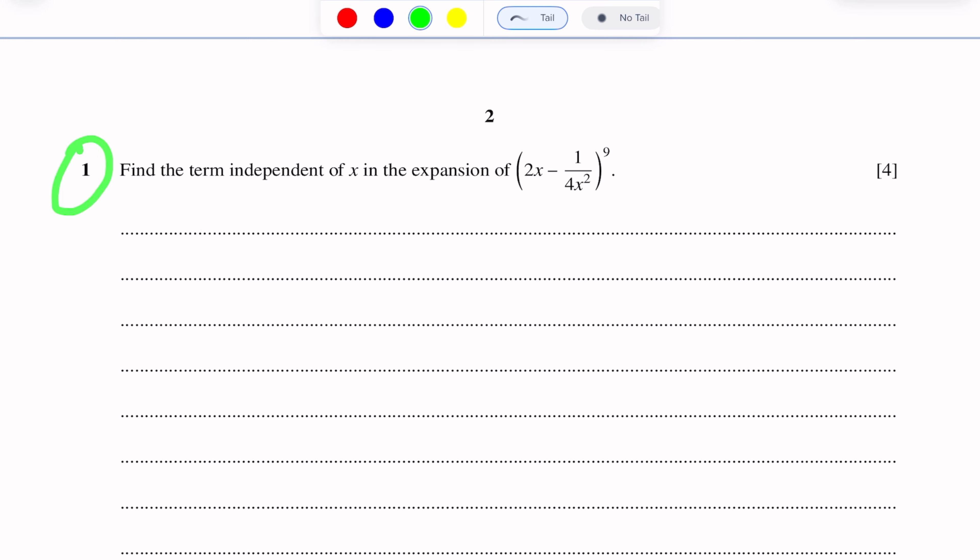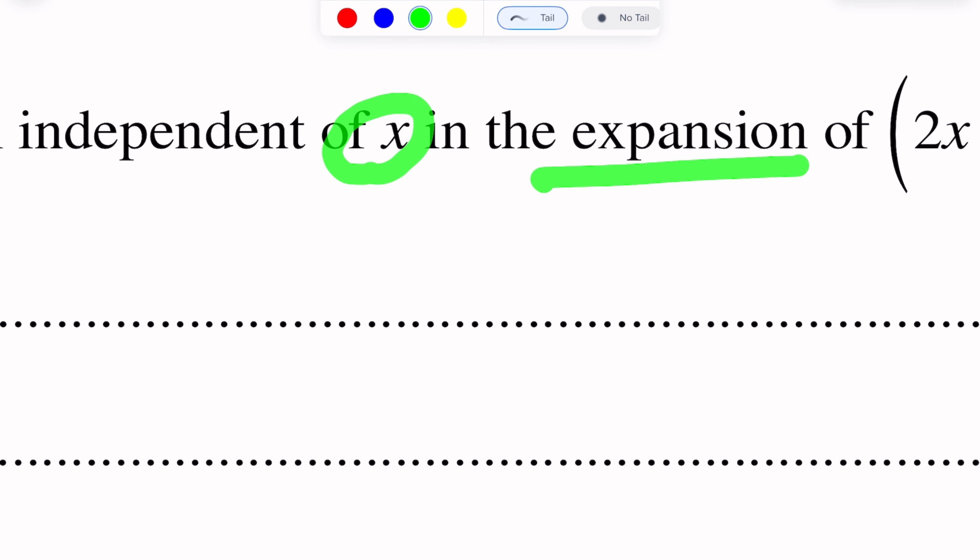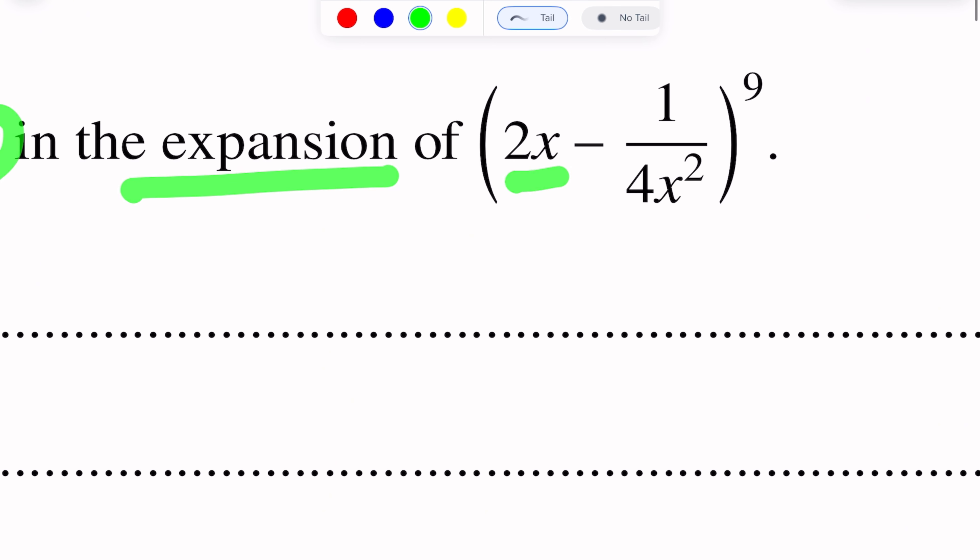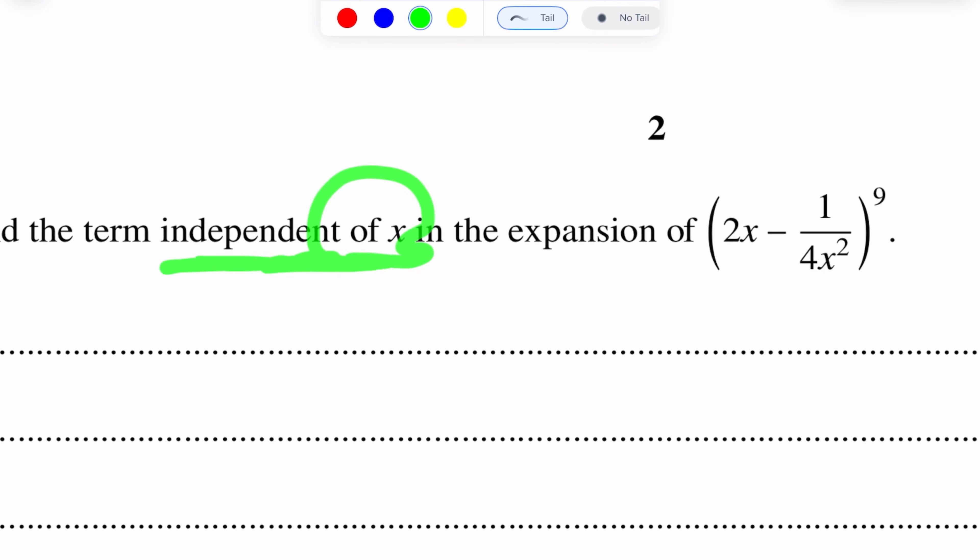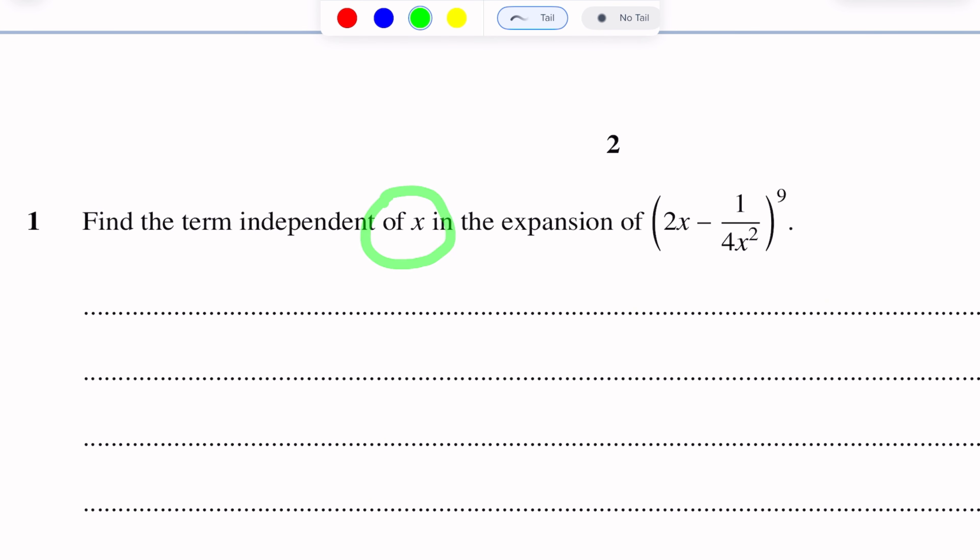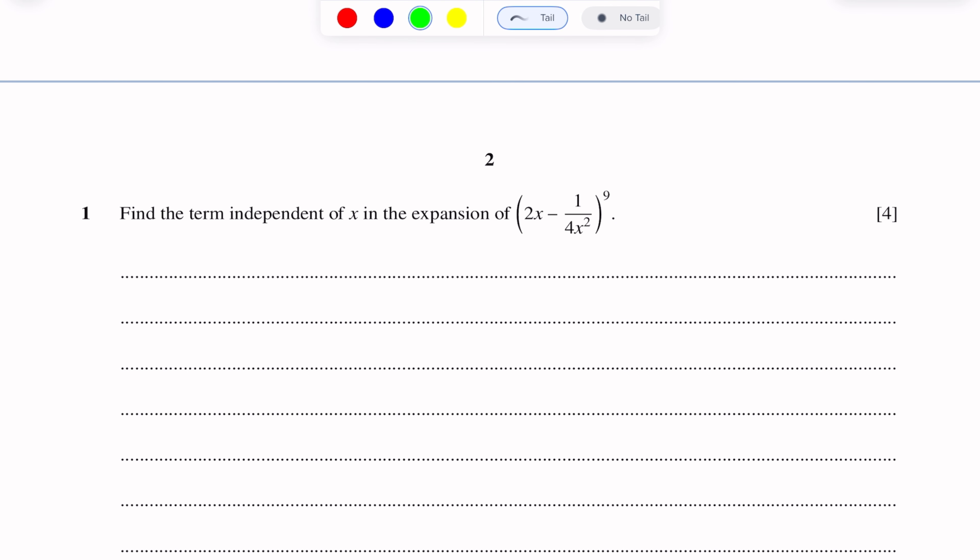First question of this paper is of binomial expansion. Find a term independent of x in the expansion of (2x - 1/(4x²))^9. If we totally expand, there are many terms. But we need to find the term independent of x, which means x is not involved. This is a specific term find formula problem.